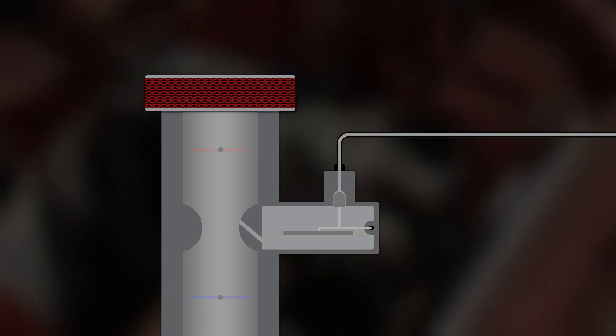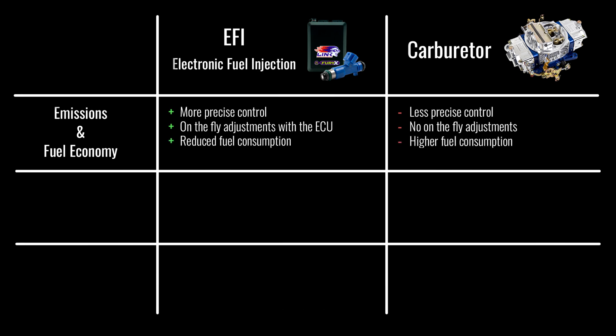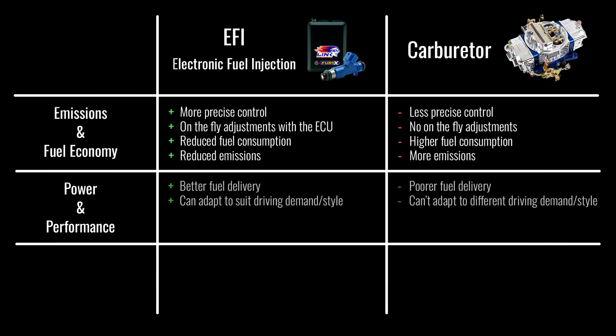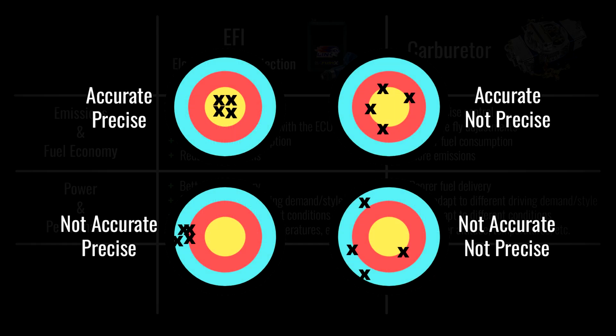So that's roughly how a carburetor works, but how do these stack up against modern electronic fuel injection systems? In terms of emissions and fuel economy, EFI can be more precisely controlled and adjusted on the fly using the ECU, resulting in reduced fuel consumption and fewer emissions — the main reason it began to replace the carburetor in the 1970s. As for power and performance, EFI is much better, as fuel delivery can be tuned to match driver demand and adapt to conditions through ECU sensors. Carburetors are precise but not accurate, meaning that while they might be consistent, they cannot account for changes in air or fuel temperature, atmospheric pressure, or any other variable.